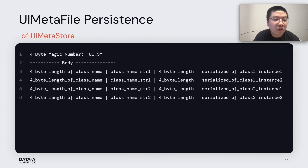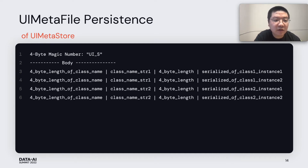The UI Meta store will persist a file called the UI meta file. In this file, there are four bytes magic number and the body. The body consists of four-byte length records, each containing four parts: first, four bytes to store the length of the class name; then the class name string; next, four bytes for the length of the class instance; then the serialized class instance. All the information in the UI Meta store will be persisted in this file.